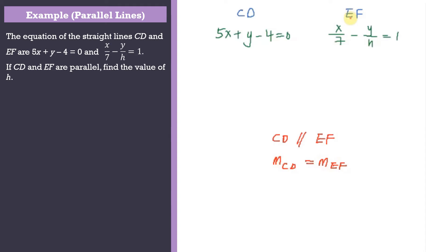For the intercept form x/a + y/b = 1, the gradient equals negative y-intercept over x-intercept. Applying this formula, the gradient for EF equals negative of the y-intercept over the x-intercept. Here that's negative of negative h over 7, so the gradient for EF is h/7.